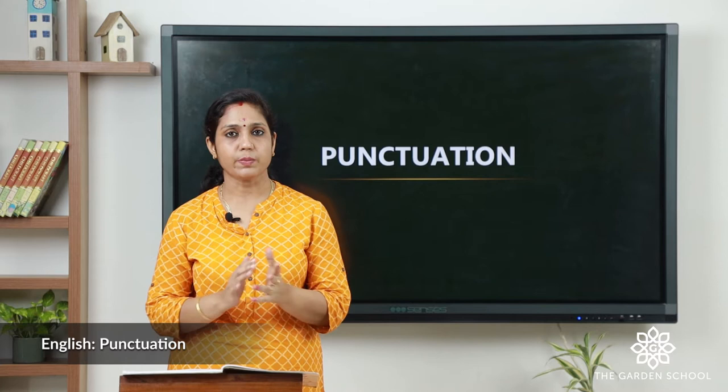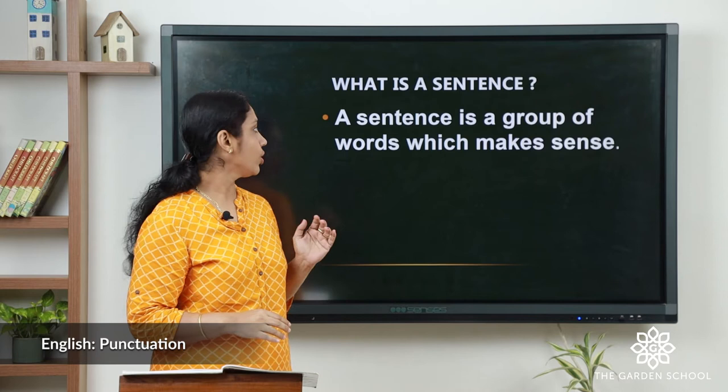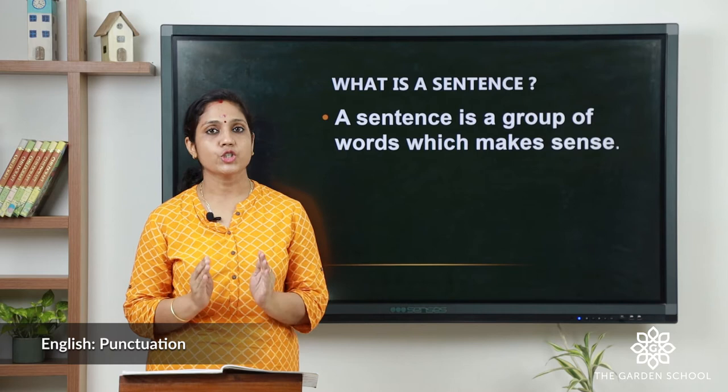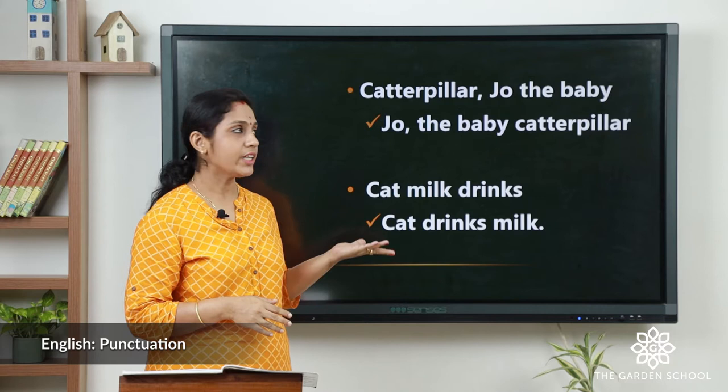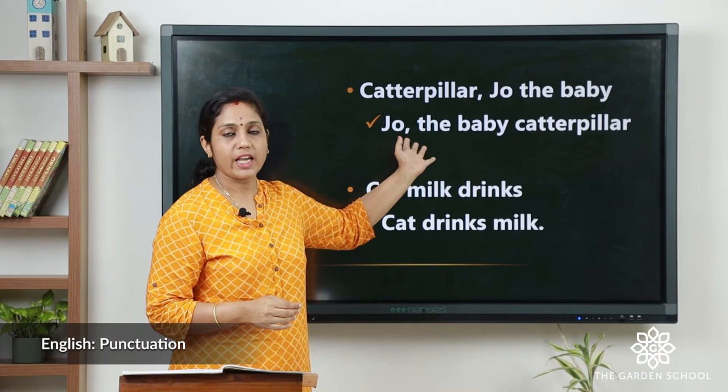Before that, first let's learn what is a sentence. A sentence is a group of words which makes sense — that is, a group of words that should have a meaning. Here you can see: 'caterpillar Joe the baby' — words are there, but is there any meaning? Let's rearrange the words and see: 'Joe the baby caterpillar.' Now the sentence has got a meaning.